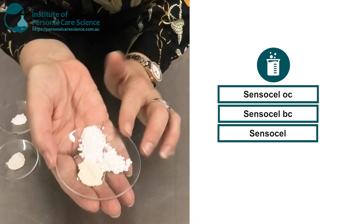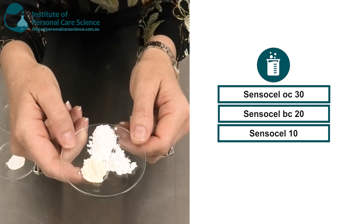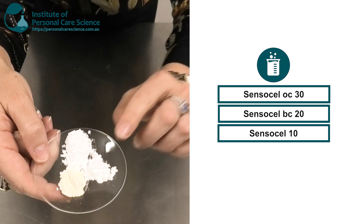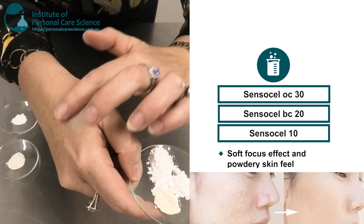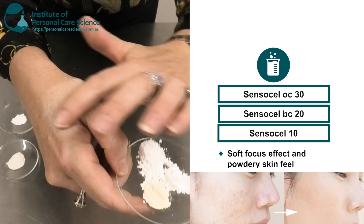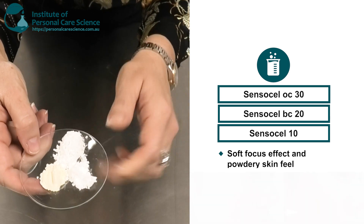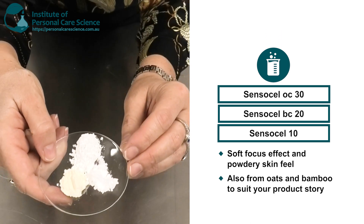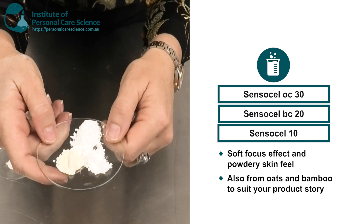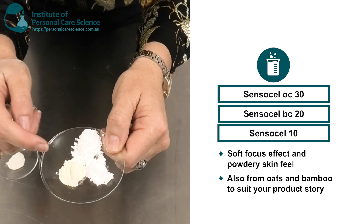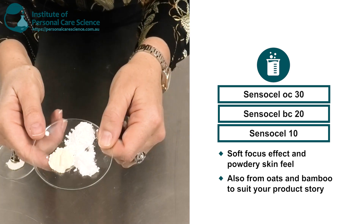Next is some short fibre ranges. This is their Sensor Cell OC 30, their Sensor Cell BC 20, and their Sensor Cell 10. These are used for your soft focus effects, to really give you that instant blurring effect in a finished product. They're all quite small — 20 micrometres or 35 micrometres. What's interesting is they have their cellulose from plant fibre, as well as an oat and bamboo cellulose form as well, so it can really fit within various product stories. And they've all got that beautiful soft finish effect.